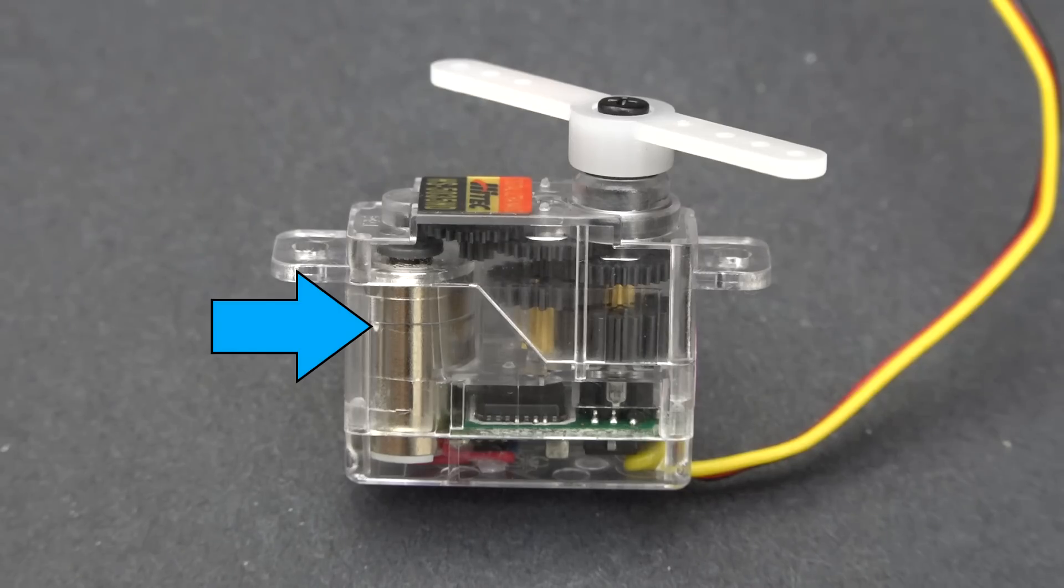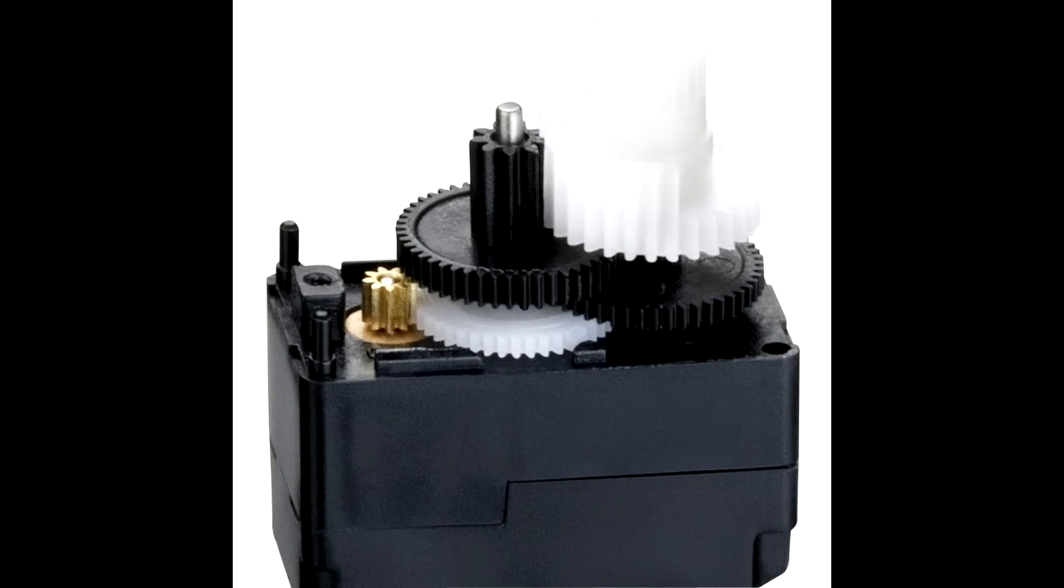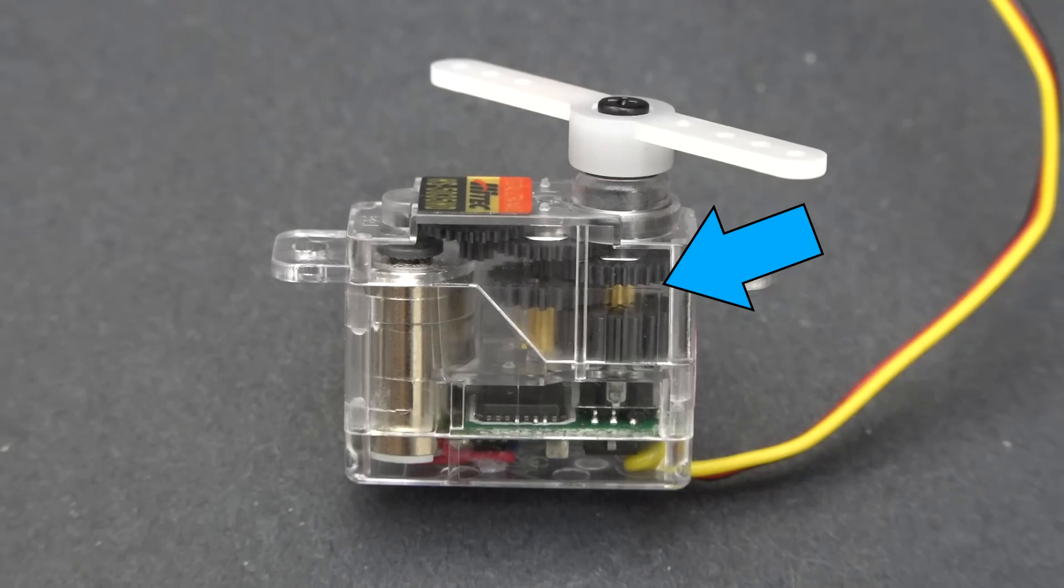You've got a DC motor being powered by an H-bridge. Then you have a series of gears to increase the torque of the system. Most cheaper servos will have a plastic gearing system, but servos designed for higher holding torque will usually have metal gears. Metal gear? Yes, they're very solid.